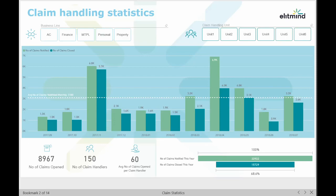On the first page we can see basic claims statistics. The first chart shows the number of claims that are notified and closed month by month. We can clearly see how these strategic figures change over time, and moreover what the average number of claims notified per month is.